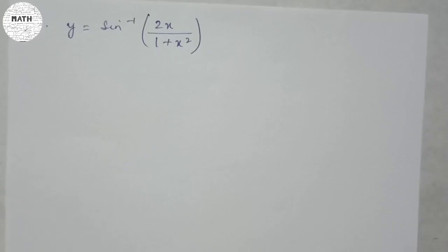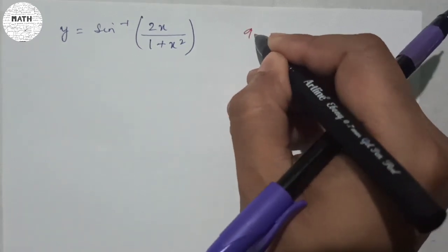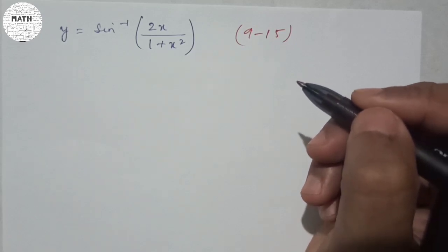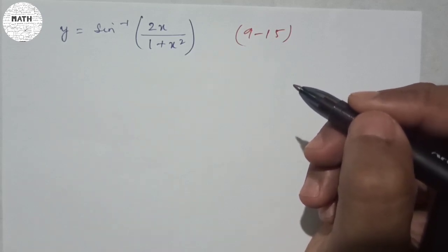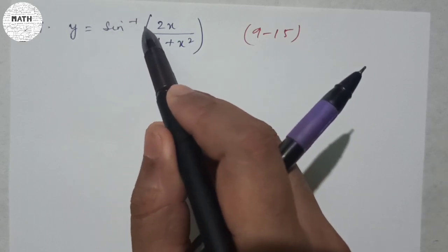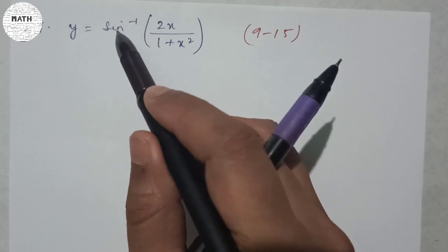Question number 9: y = sin⁻¹(2x / (1 + x²)). The difference between questions 1–8 and 9–15 is that from question 9 onward, inverse trigonometric functions are involved. My approach is to always try to remove the inverse. To do that, use the appropriate formula and substitution method.